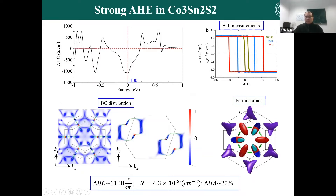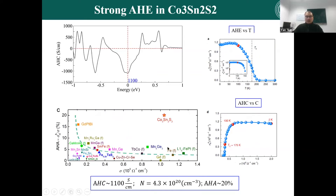Furthermore, because the charge carrier density is very small — there are only very small Fermi pockets on the surface — the charge carrier density is only around 10^-20 order. Because of that, it also has a very large anomalous Hall angle. This is the first compound to host both a strong anomalous Hall conductivity and a large anomalous Hall angle.